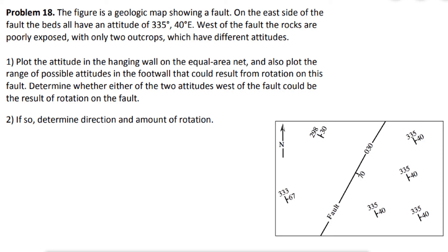In problem 18 we are dealing with a rotational fault and we need to find how much rotation took place along the fault plane and which one of the given attitudes for the foot wall is correct. The fault is striking northeast-southwest and dipping towards southeast 70 degrees. The hanging wall attitude is consistent at 335/40, but on the foot wall two different attitudes are given — one is correct and the other is wrong.